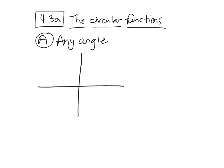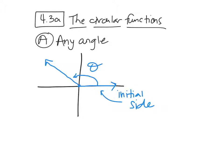Here's our Cartesian plane. When we have an angle, we always start here on the positive x-axis. That's called the initial side. And if we want a positive angle, we will open this up in a counterclockwise direction and we stop somewhere — wherever we want to — and that would be our angle. The place that we stop is called the terminal side. Terminal means ending.